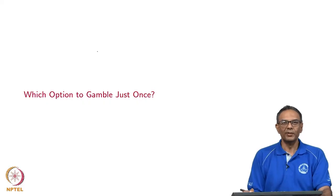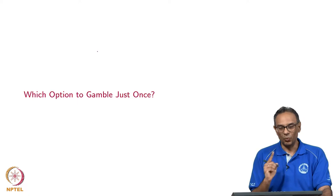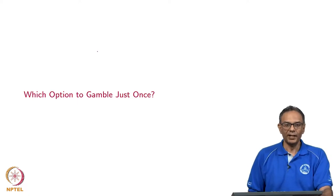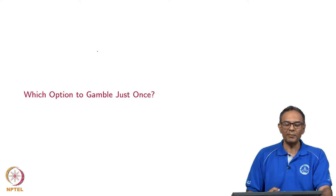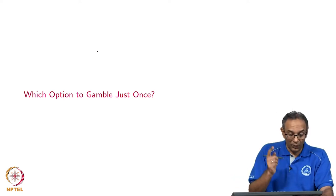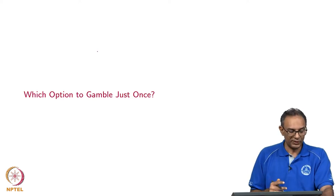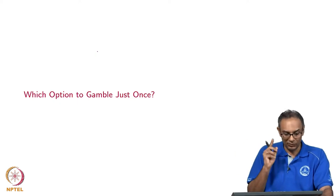In this lecture, we will look at which option to gamble just once. Remember, the title of this topic is One Time Decision. Like the secretary problem that we saw before, where we made just one decision on which person to hire as a secretary, here too we are going to make just one decision — which option to gamble — and I am going to gamble just once, not keep gambling.